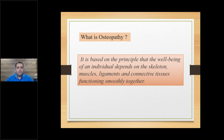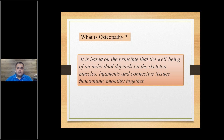Now to our topic: what is osteopathy? Osteopathy is based on the principle that the wellbeing of an individual depends on the skeleton, muscles, ligaments, and connective tissues functioning smoothly together. In simple terms, function affects structure and structure affects function. The entire musculoskeletal system — muscles, bones, ligaments, connective tissues — everything from head to toe needs to be functioning smoothly. Only then will the body's function also be normal.